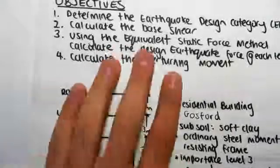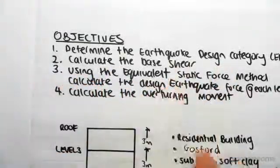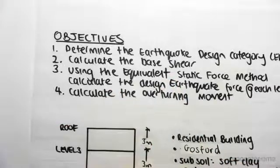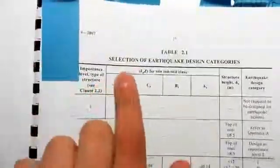So what we're going to be doing in this video is finding the earthquake design category. That's going to help us eventually find the base shear and the overturning moment.